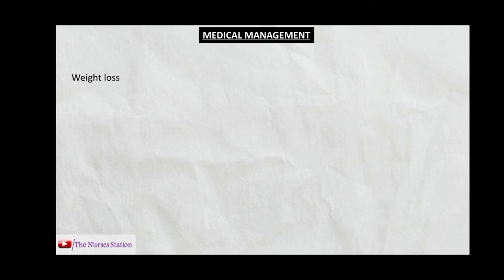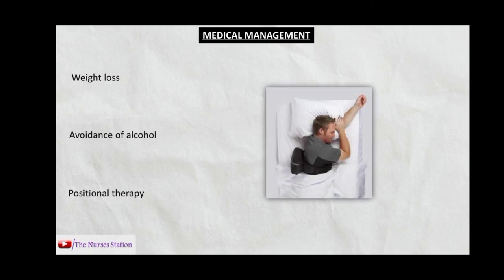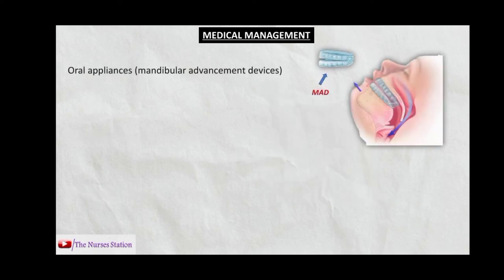Medical management includes weight loss, because with weight loss the pharyngeal mass decreases and chances of obstruction are reduced. Avoidance of alcohol is recommended. Positional therapy involves devices that do not allow the patient to sleep on their back. Oral appliances such as mandibular advancement devices advance the mandible slightly forward to increase the pharyngeal lumen. Supplemental oxygen may be given if the patient has decreased oxygen levels.